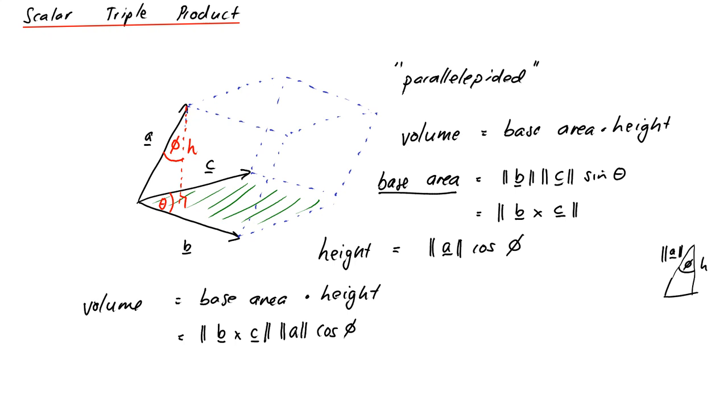And actually, what we have here is something that looks like a dot product. Remember, length of one vector, times the length of another vector, times the angle between them, is the dot product.